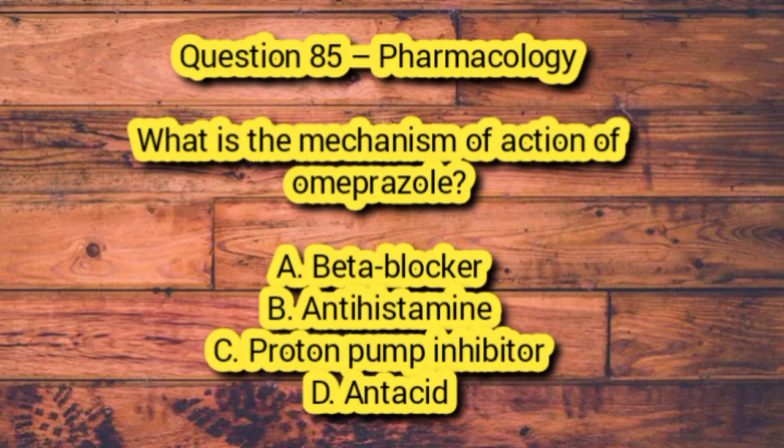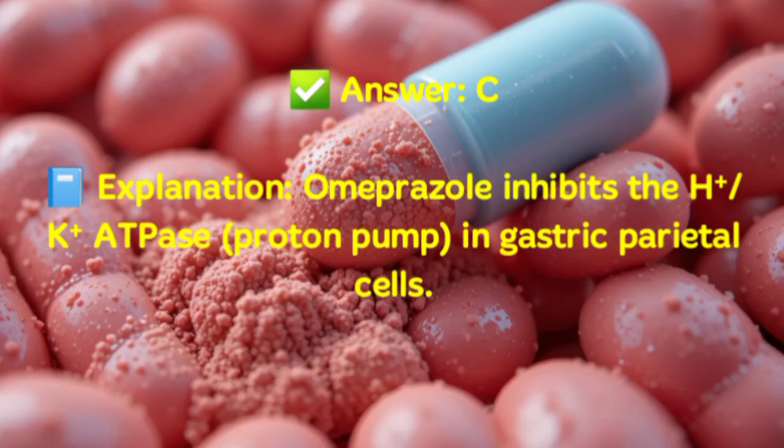Question 85 – Pharmacology. What is the mechanism of action of omeprazole? A. Beta blocker. B. Antihistamine. C. Proton pump inhibitor. D. Antacid. Answer: C. Explanation: Omeprazole inhibits the H-K-ATPase proton pump in gastric parietal cells.